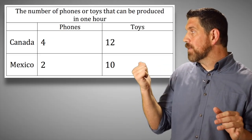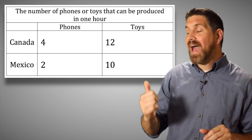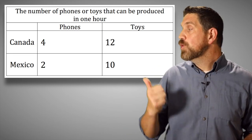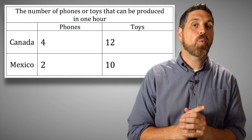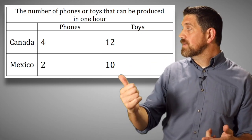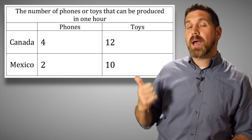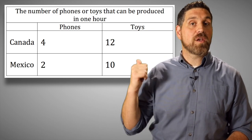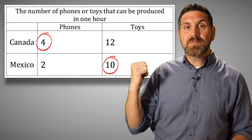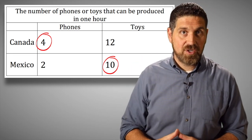For example, with new numbers: this is an output question. Four times 10 is 40, two times 12 is 24. You want the higher number — 40 is more, so that tells you who has the comparative advantage and should specialize in what. Super fast, super dirty.